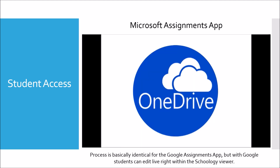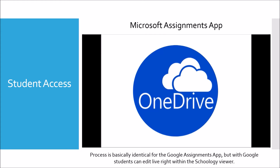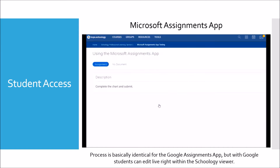Before teachers and students can use this app, they must first connect their Microsoft OneDrive to their Schoology account. Once their OneDrive is connected in Schoology, the student will access the assignment like any other Schoology assignment. The student should locate and select the assignment, and once in the app, the student will see a description of the assignment and any instructions or content provided by the teacher.